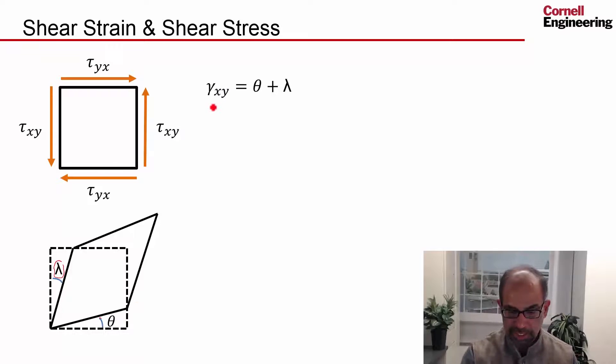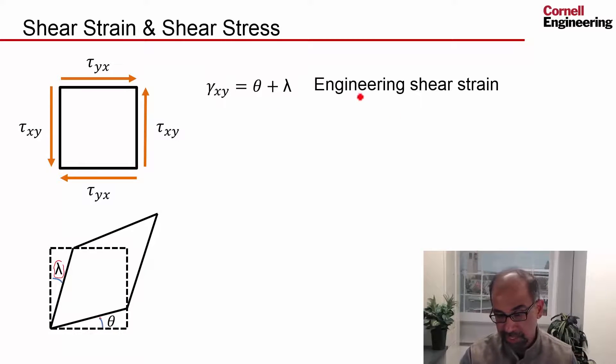And the shear strain is defined as you add up these two angles, so theta plus lambda. In fact, that's the engineering shear strain. There are two definitions for shear strain. And if you add up theta and lambda, that gives us the engineering shear strain that's denoted as gamma.